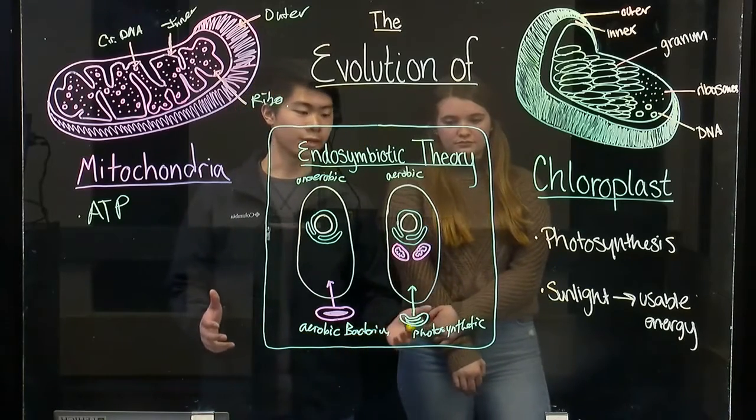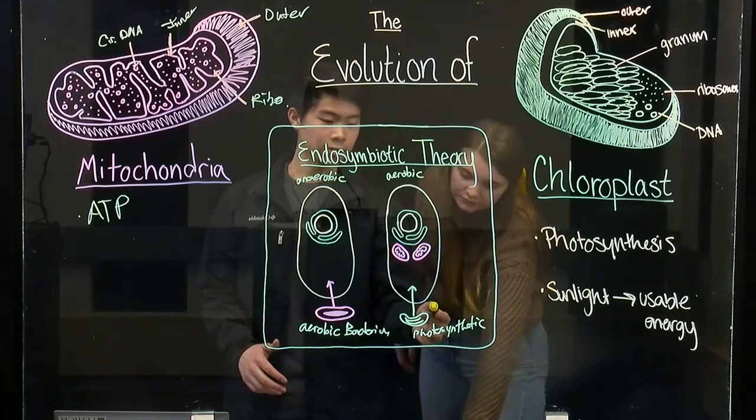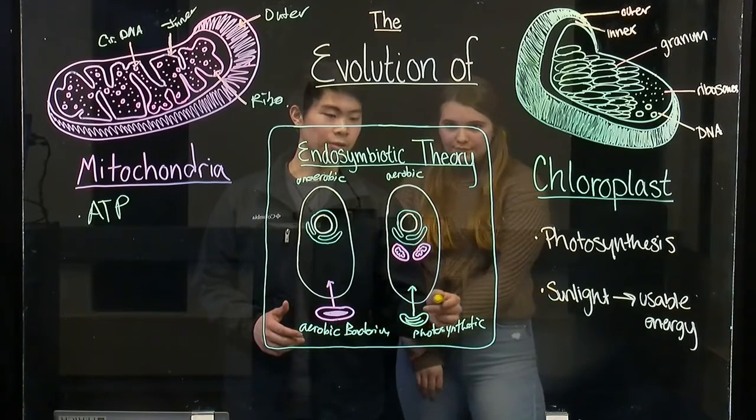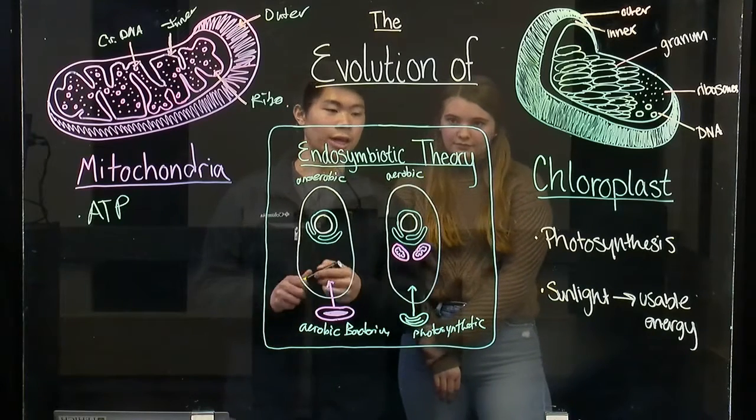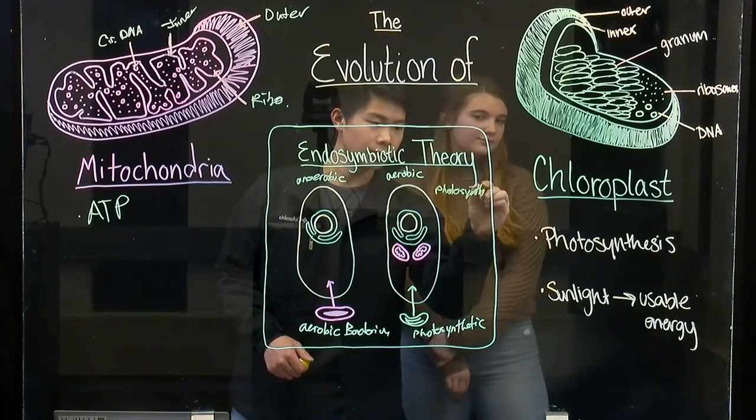For plant cells and algal cells, it was able to use photosynthetic bacterium which was engulfed, and this evolved into chloroplast, which now makes it a photosynthetic eukaryote.